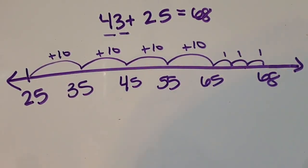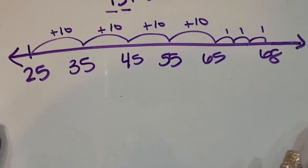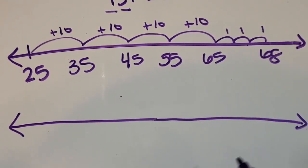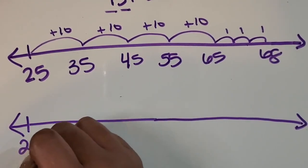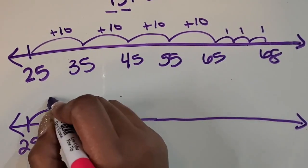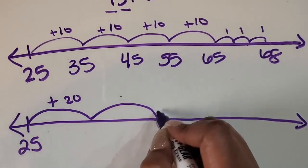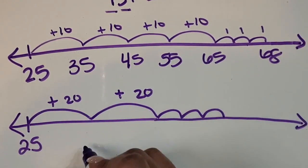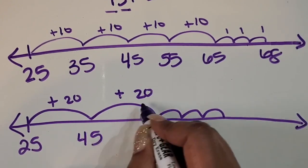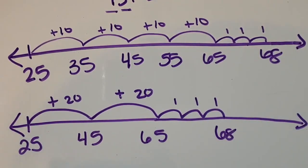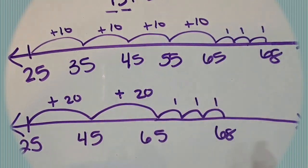Another student might choose to add it differently. They might start with 25 again and then add 40 in 20-increments — add 20, then add 20 — and then add 1, 2, 3. So 25 plus 20 is 45, plus 20 is 65, plus 1, 2, 3 is 68. There are multiple ways to break up both of these numbers so you can add them together using an open number line.